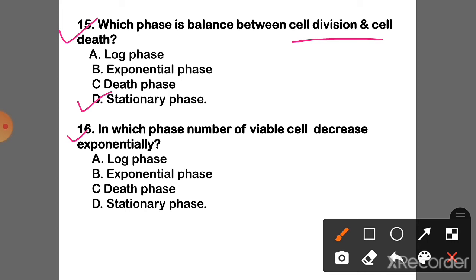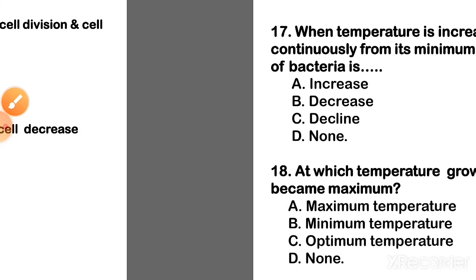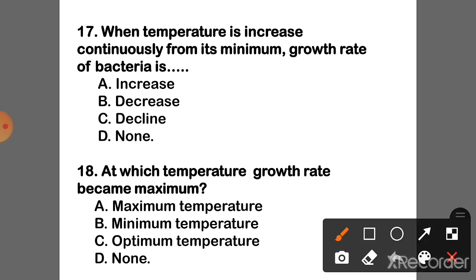Question 16: In which phase does the number of viable cells decrease exponentially? The correct answer is Option C — Death phase.